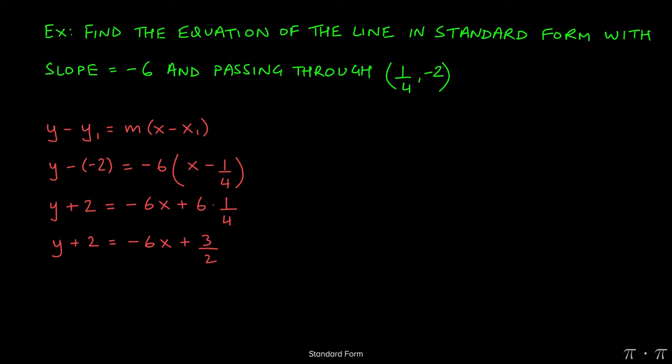Remember, we don't want any fractions. So at this stage, we can clear the fractions by multiplying each term of the equation by 2. So we get 2 times y plus 2 times 2 equals 2 times negative 6x plus 3 halves times 2. This 2 and this 2 will cancel. All the others will get multiplied.